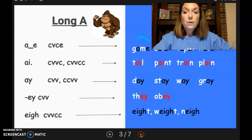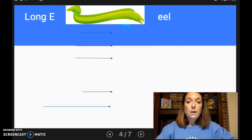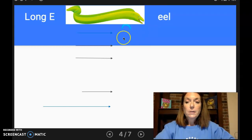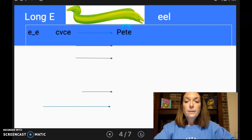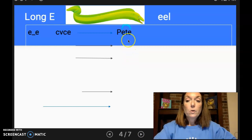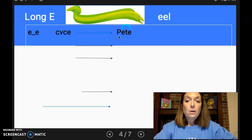Let's move on to long E. And I have a picture of an eel there. And this will be one of our spellings. But let's start with our silent E rule. All right, here we go. Not many words are spelled with E blank E. But here is an example of a name that is the long E sound spelled with a silent E, Pete.